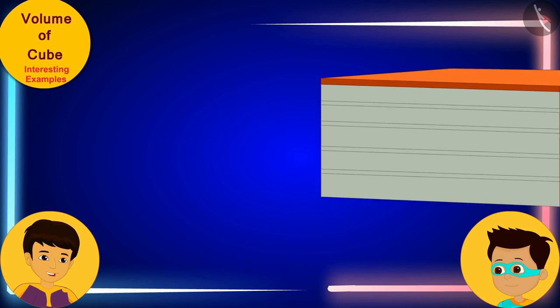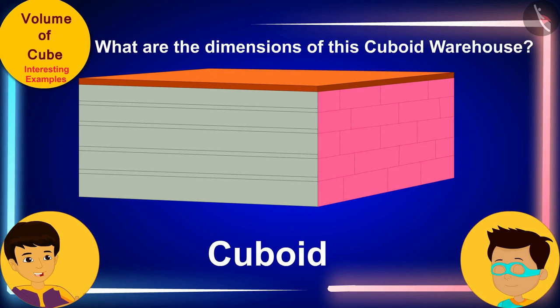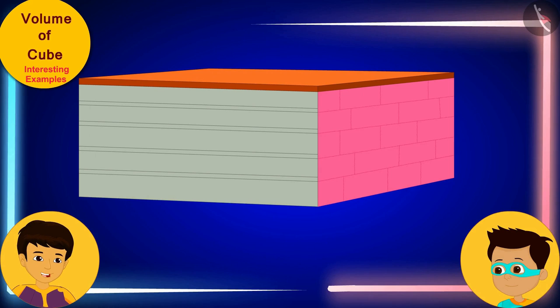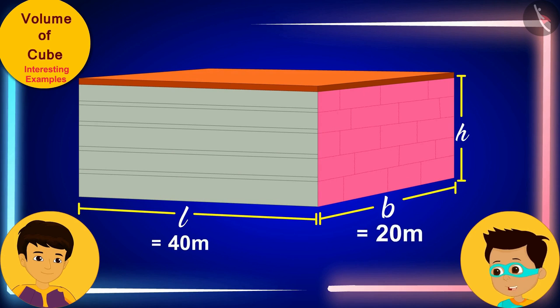Thomas, can you tell me what are the dimensions of this cuboid warehouse? The length, width and height of the warehouse are 40 meters, 20 meters and 10 meters respectively.